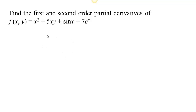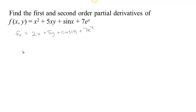Let's do some more practice: find the first and second order partial derivatives of this function. The partial with respect to x: the derivative of x squared is 2x; 5y is a constant times x so its derivative with respect to x is 5y; the derivative of sine x is cosine x; and the derivative of 7e to the x is 7e to the x. The partial with respect to y: x squared is constant so its derivative is 0; 5x is a constant times y so its derivative with respect to y is 5x; and sine x and 7e to the x are both constants with respect to y, so their derivatives are 0.